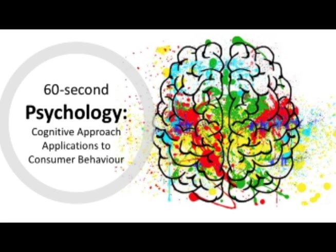The main strategies from the cognitive approach that are used by advertisers are priming and cognitive biases. Priming is the idea that an earlier stimulus causes a temporary increase in accessibility of thoughts and ideas, so when a later stimulus relates to this, information is more readily available and therefore influences the response.